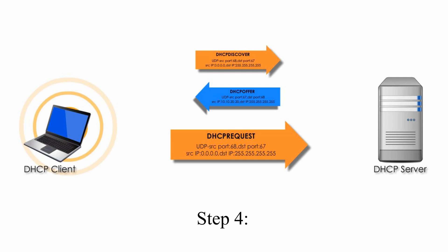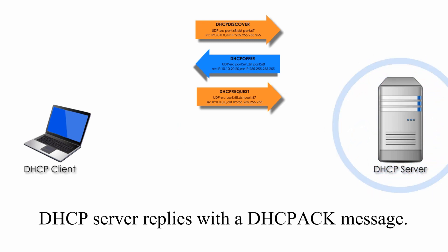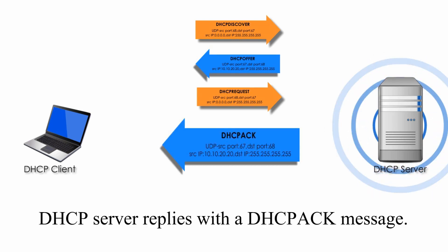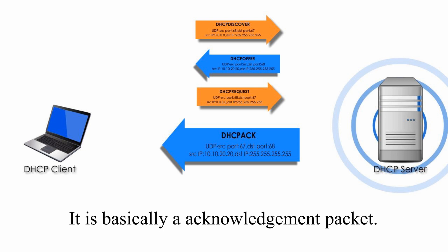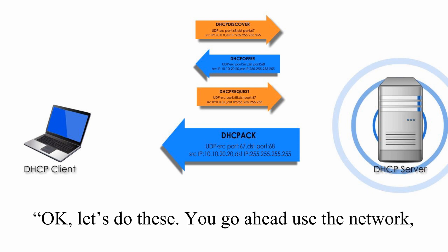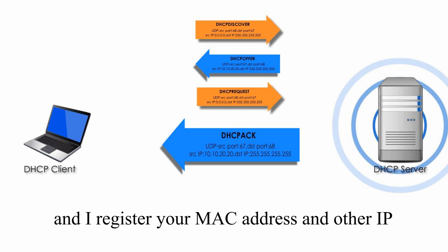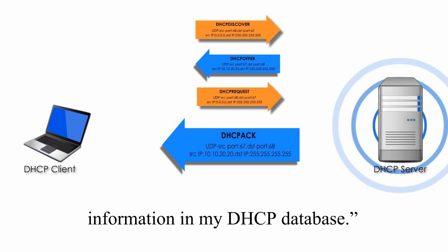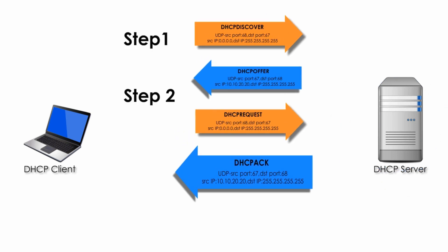Step 4, the final step: the DHCP server replies with a DHCP ACK message. It's basically an acknowledgement packet. It simply says: 'OK, let's do this. You go ahead, use the network or internet, and I will register your MAC address and other information in my DHCP database.' And that's the whole DHCP process.